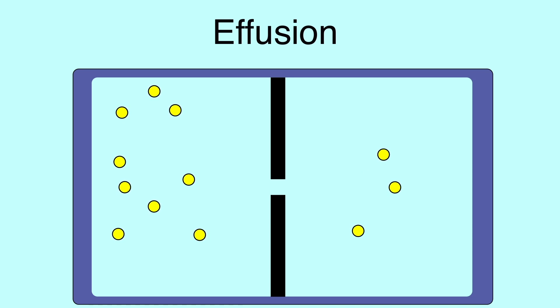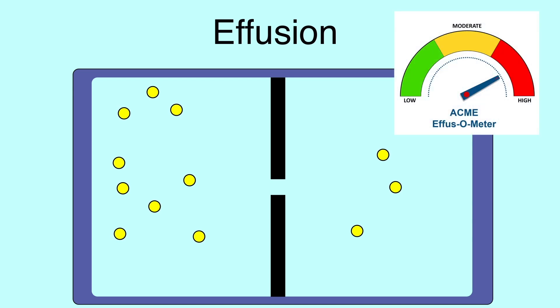So effusion seems like a strange thing to care about, but the reason it matters is really because it's easier to measure the rate of effusion than it is to measure the rate of diffusion. You have this closed-in box that you can sample more easily to get more accurate measurements.